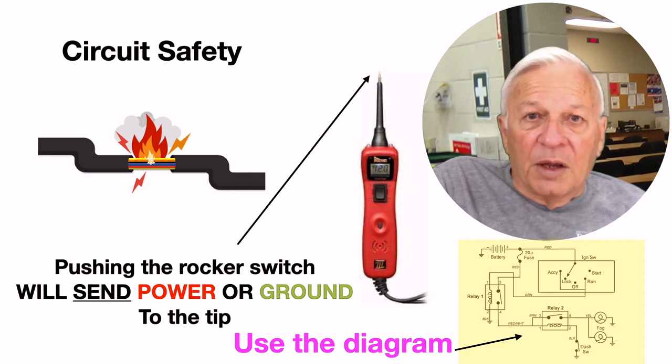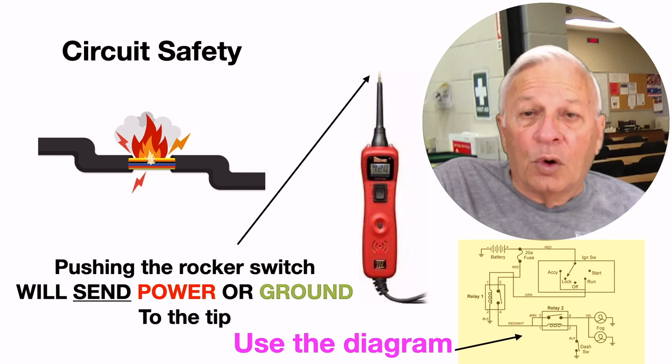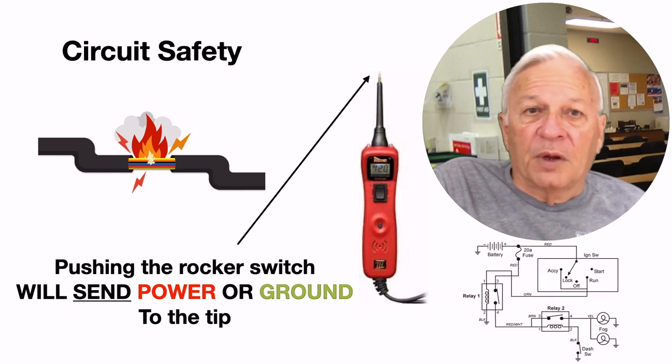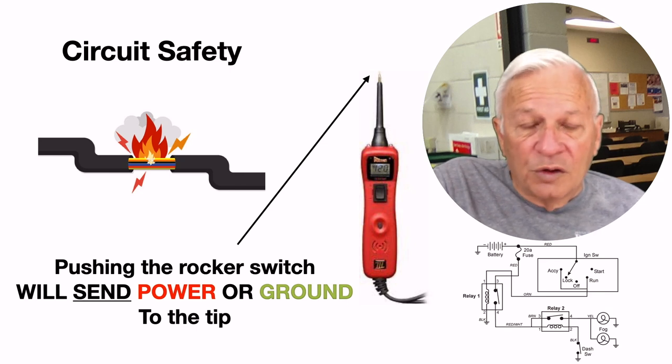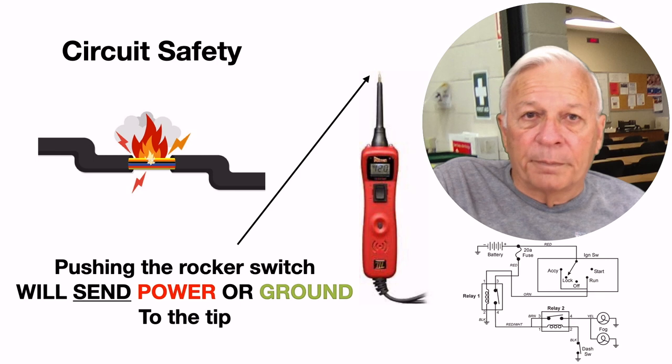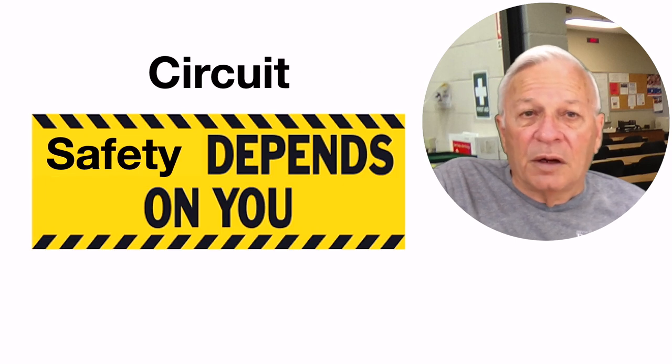Use the diagram. Be sure to understand it before you toggle the trigger or push the rocker switch. When you push the rocker switch, you will send power or ground to the tip. And just like a bullet will travel to wherever it is pointed, when the trigger is pulled, current will travel or ground will be provided to wherever the tip is pointed. So I repeat, circuit safety depends upon you.